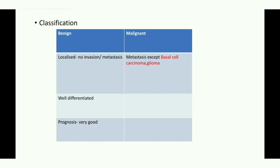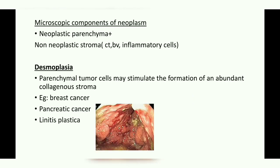A benign tumor, since it can be surgically removed, has a good prognosis, whereas a malignant tumor has a poor prognosis. Now the microscopic components of a neoplasm: parenchyma and stroma. Parenchyma is the neoplastic component, while stroma is the non-neoplastic component. Stroma includes connective tissue, blood vessels, and inflammatory cells such as lymphocytes and macrophages. The blood supply is very important for the growth, survival, and replication of tumor cells.